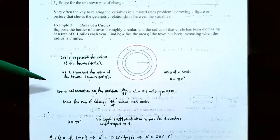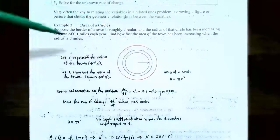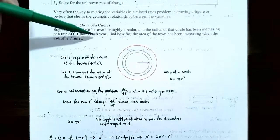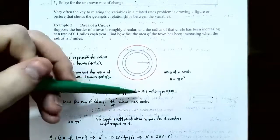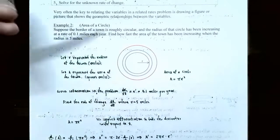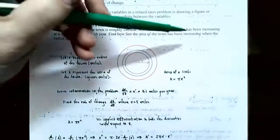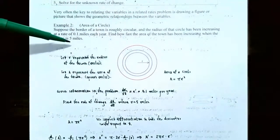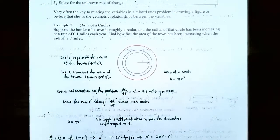The radius of the circle is increasing at a rate of 0.1 miles each year, so that's r prime — the rate the radius is increasing. So r prime equals 0.1 miles per year. We want to find A prime, the rate of change of area, when the radius is 5 miles.